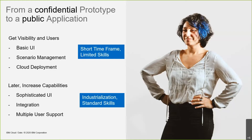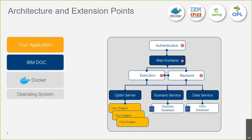Looking at what's inside a generated application for DOC, you will get a set of services. Going from top to bottom: an authentication service that allows you to integrate with your active directory and ensure users have the right access and roles. You will have a web front-end — the user interface for business users. There is an execution layer that lets you run tasks, which can be run on the optimization server or outside. And there is a scenario service and data service managing multiple scenarios and configuration.